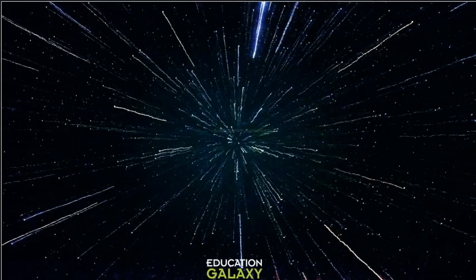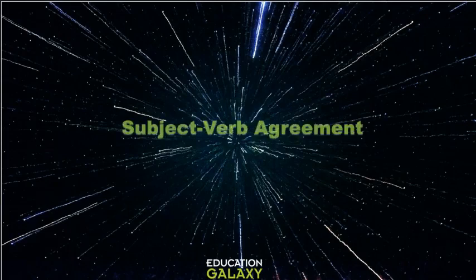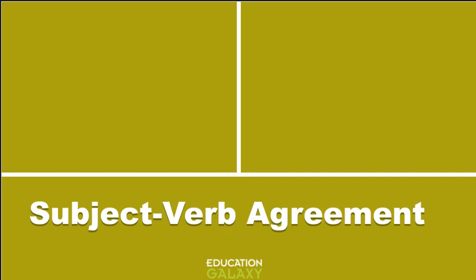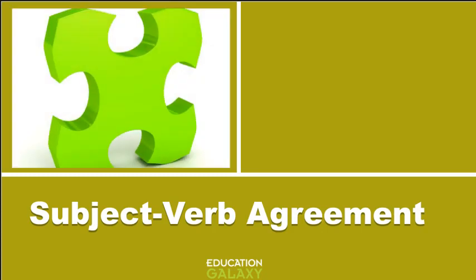Hello, today we are going to learn about subject-verb agreement. It means that subjects and verbs in a sentence must agree in number. Here is a subject — it's a puzzle piece. Remember, a subject tells us who or what the sentence is about.